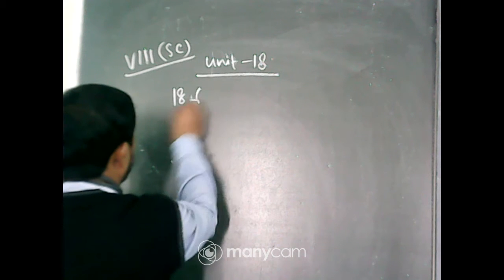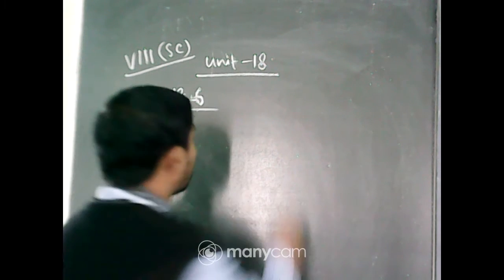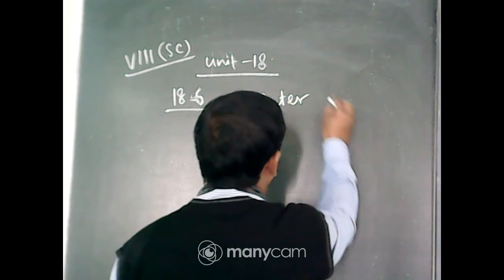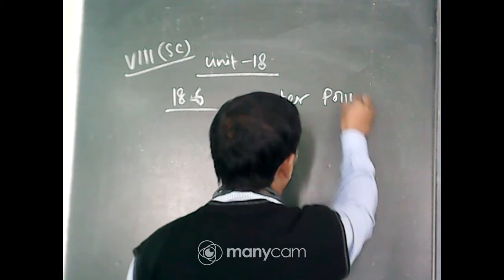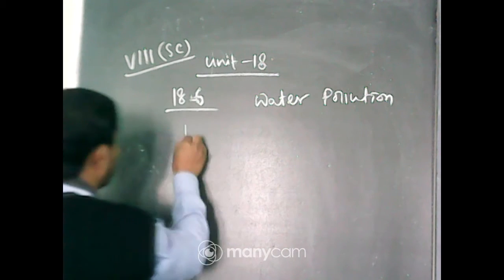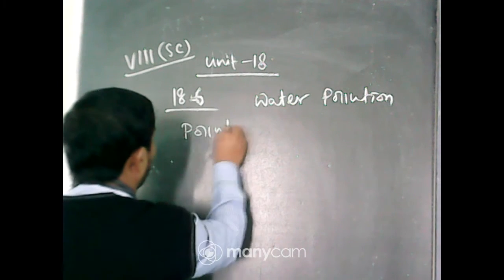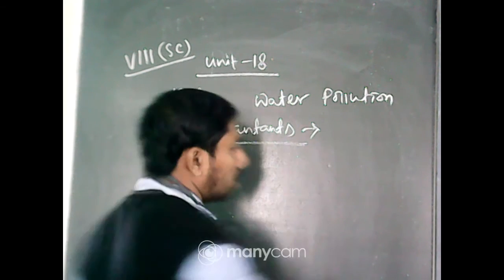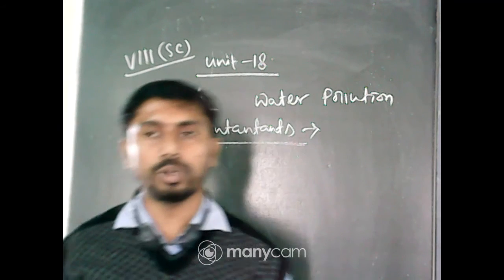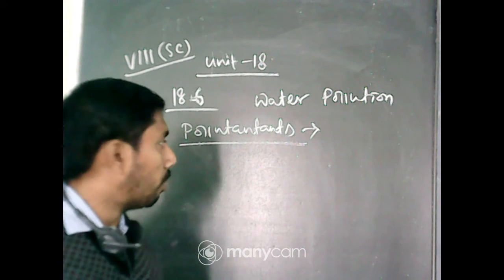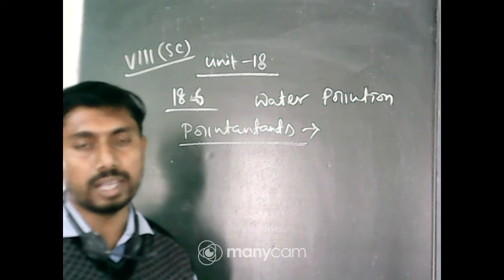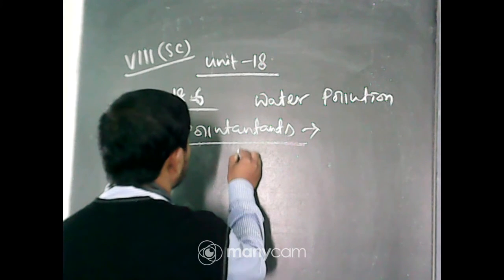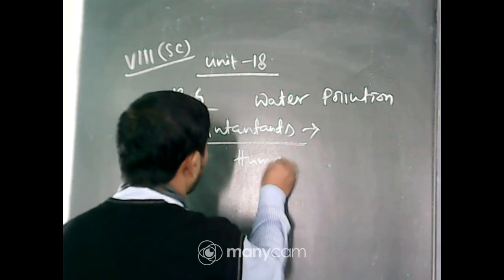Next is the new topic, that is water pollution. Already we come to know about pollutants. Now next topic is water pollution. Water pollutants, those substances are responsible for the pollution of water, is called as water pollution. Now water pollutants are basically producing from human activities.